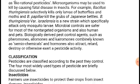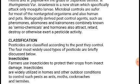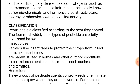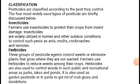Now we are starting the classification of pesticides. Generally, pesticides are divided into four main types: first is insecticides, second is herbicides, third is fungicides, and fourth is rodenticides. Farmers use insecticides to protect their crops from insect damage. Public health officials use these chemicals to fight mosquitoes and other insects. Insecticides are widely utilized in homes and other outdoor conditions to control ants, moths, and cockroaches.